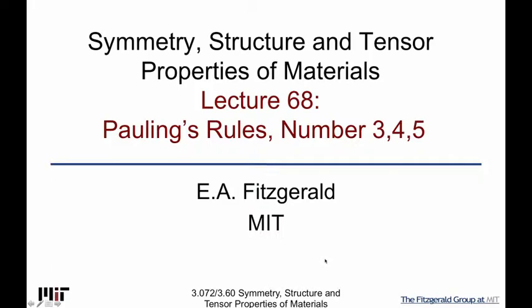In particular, rule 3 is kind of valuable when looking at more amorphous structures that have polyhedra in them, and it tells you how they might bond to each other locally. Overall, the first two rules pretty much tell us what to expect in terms of narrowing down the options of space groups for particular combinations of elements.